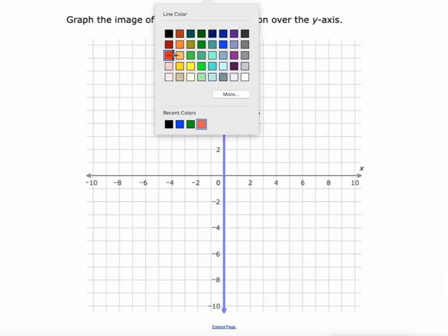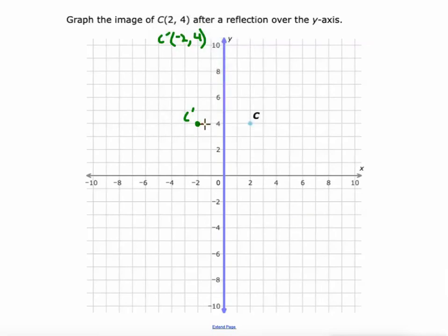Again, let's look at this red line that's formed when we connect these two points. Number one is that it meets the line of reflection at a 90-degree angle, and that red line is cut in half by the line of reflection.